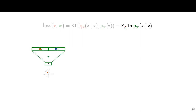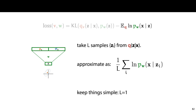For the second term, we need to compute the expectation under q of the log probability of x given z. Such an expectation is not easy to work out and certainly not easy to backpropagate through, so instead we will approximate it in the simplest way — by taking a finite number L of samples from the distribution q(z|x). We approximate our expectation by averaging the log probabilities over these L samples. To keep things simple, we just take a single sample, and since we'll be computing the network many times during training, overall we'll be taking lots of samples anyway.